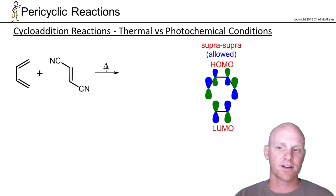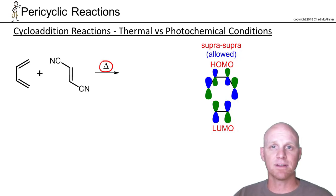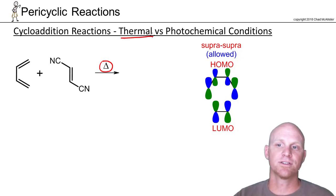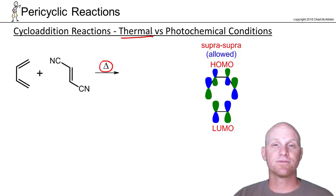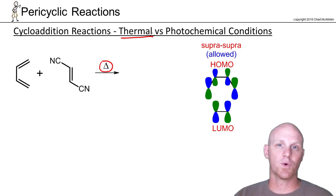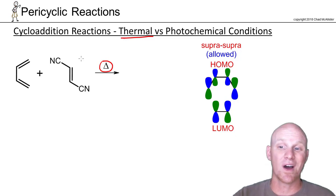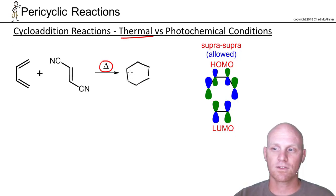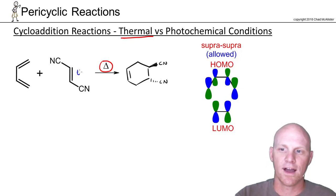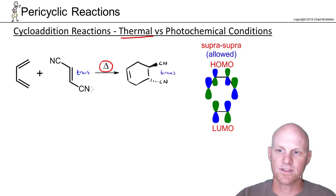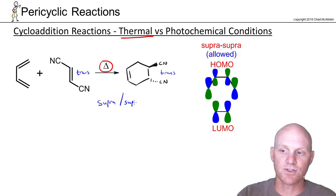Up until now all the reactions have had a triangle above the arrow meaning heat - thermal conditions. It turns out for most pericyclic reactions you have thermal as well as photochemical conditions. The big difference is that light of just the right energy promotes electrons up to a higher energy orbital, and it changes some things. Starting with Diels-Alder: my product looks like this, and I've got two cyano groups that are trans to each other in the reactant, so they're going to be trans in the product. When you have a suprafacial-suprafacial transition state, if your dienophile is trans, your product is trans; if your dienophile is cis, your product is cis.